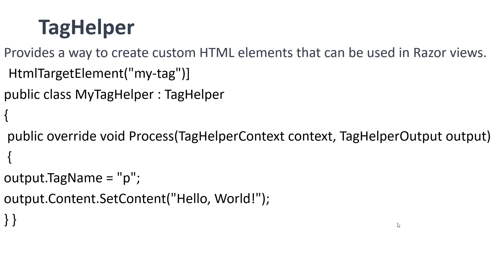The next one is Tag Helper. There are lots of built-in tag helpers available in ASP.NET Core, like the input tag helper and the ASP form tag helper. Tag helpers provide a way to create custom HTML elements that can be used in Razor views. For how to design a custom tag helper, you can watch the next video.